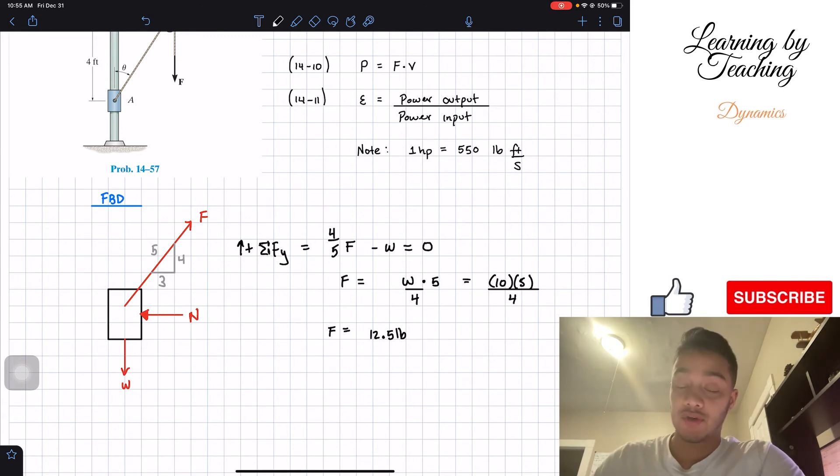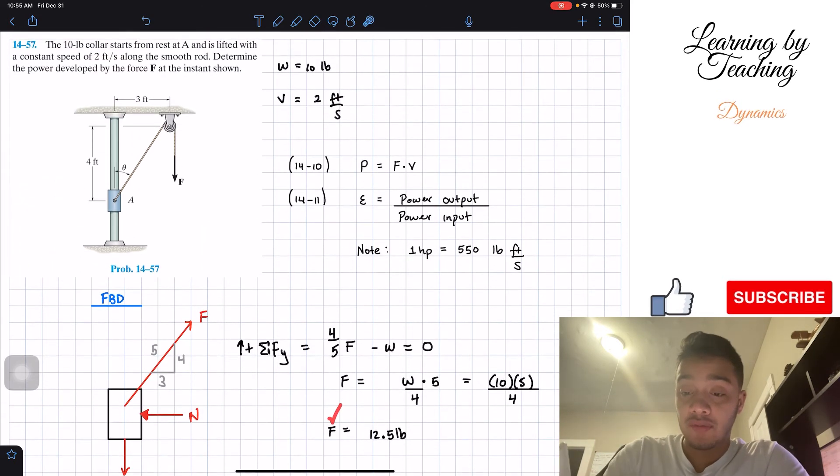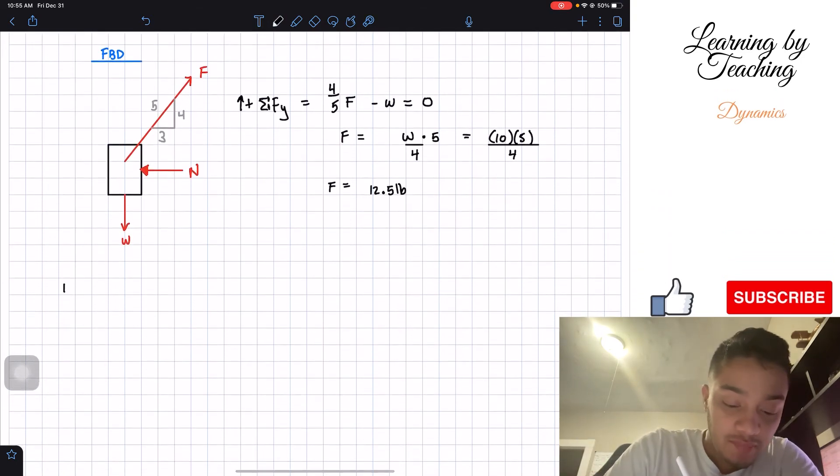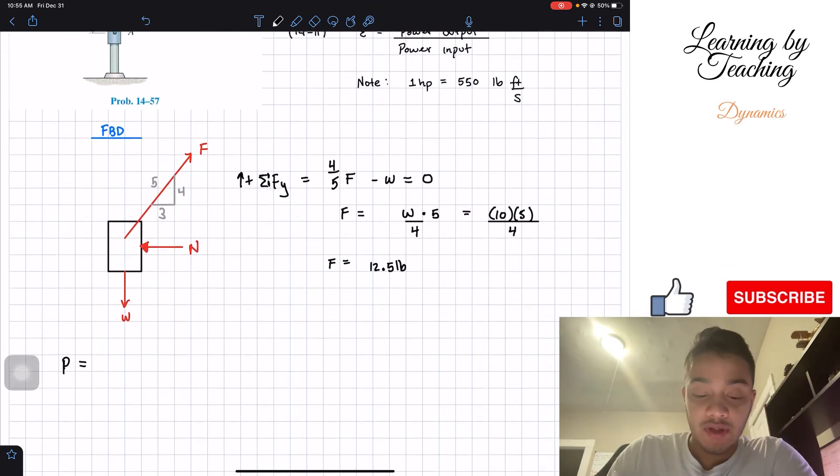Okay, so we got our force F. We know our velocity. Therefore, we can find our power. So let's go ahead and find the power, which is what the problem is asking us, which is force times velocity.